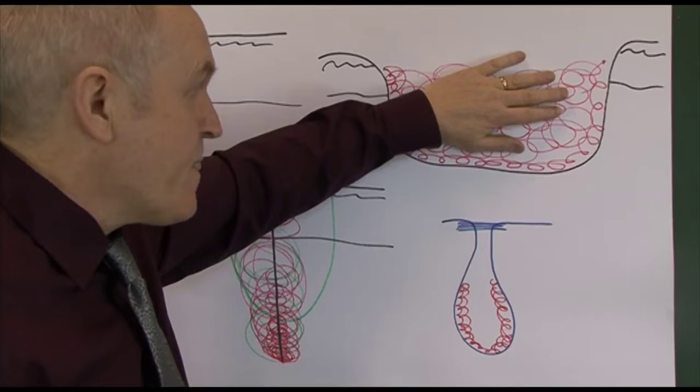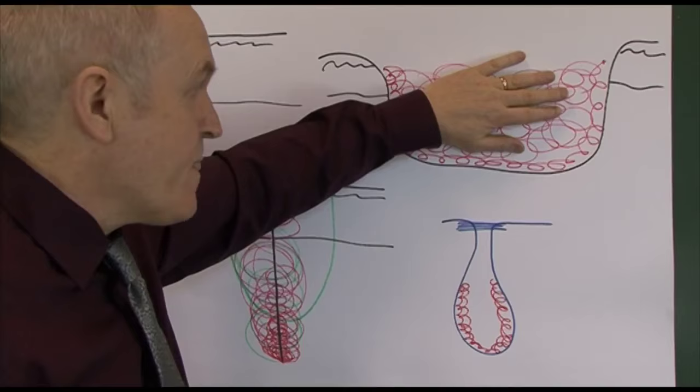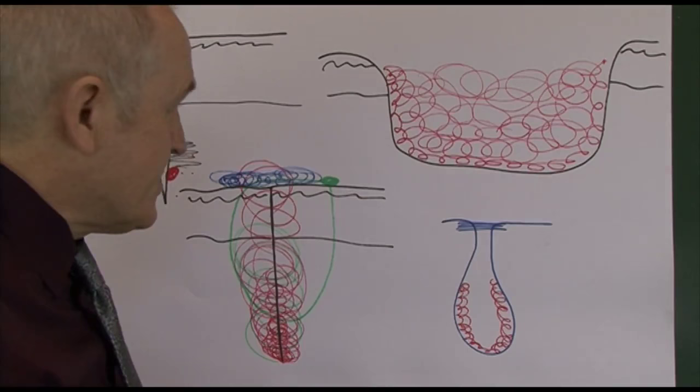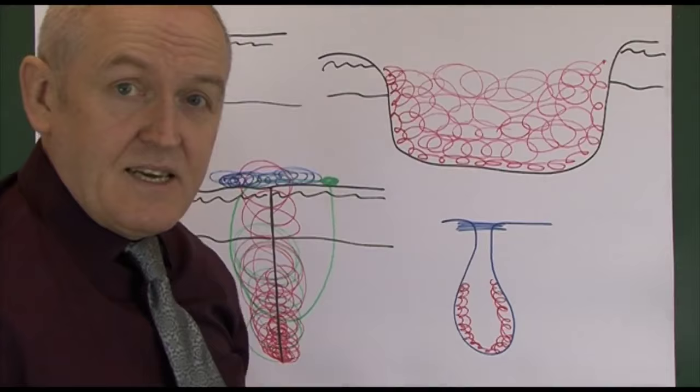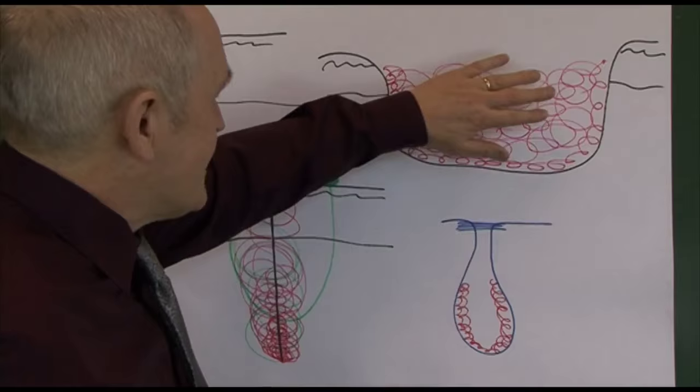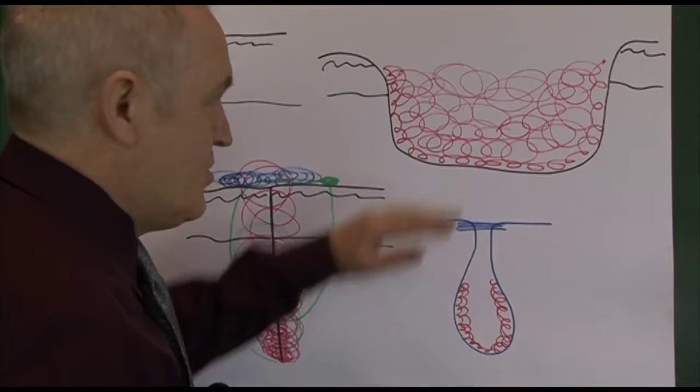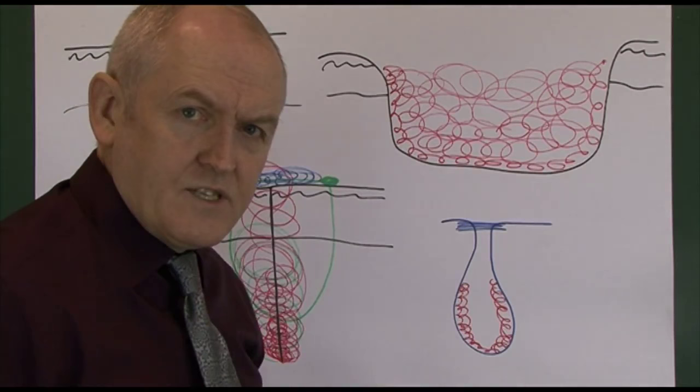So healing by secondary intention, we should use this when we cannot approximate the wound edges, or when we should not approximate the wound edges because of infection risk. Now the advantage of this is that the wound is open, so if any infection or necrotic tissue presents, it can be removed. We can debride necrotic tissue. We have access to the wound, and we can control the infection. The infection is not closed in the wound. So the big advantage of this is that we're hopefully going to prevent wound infection.